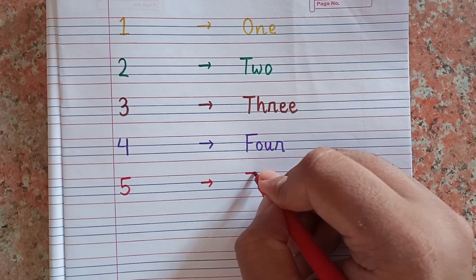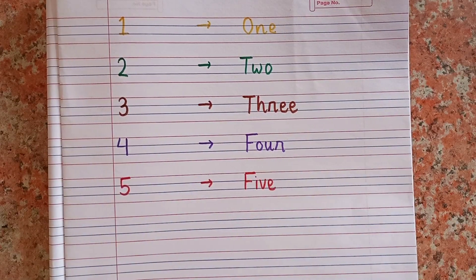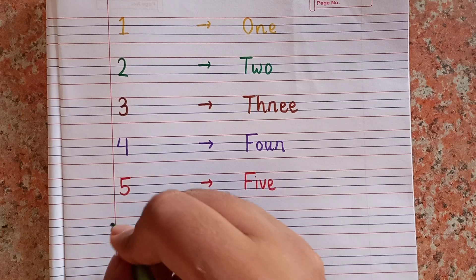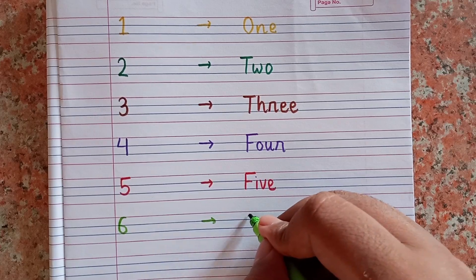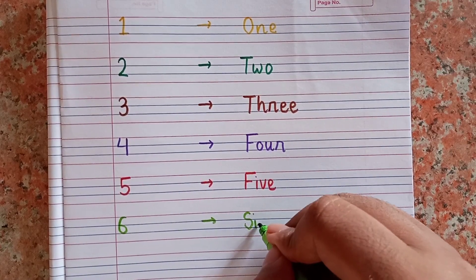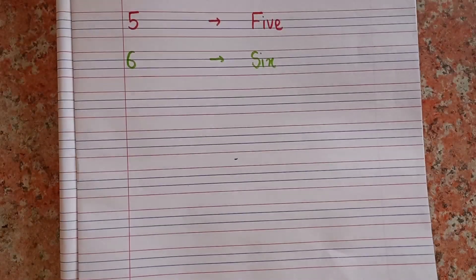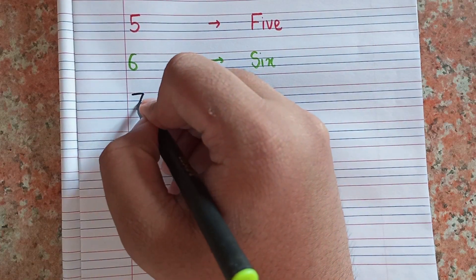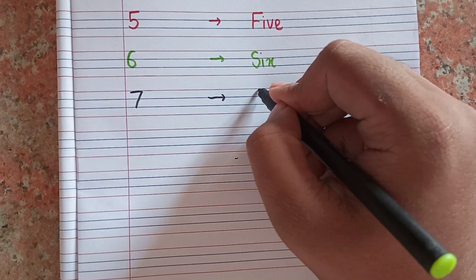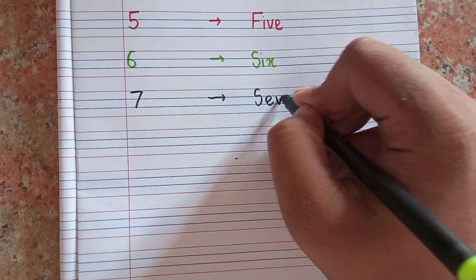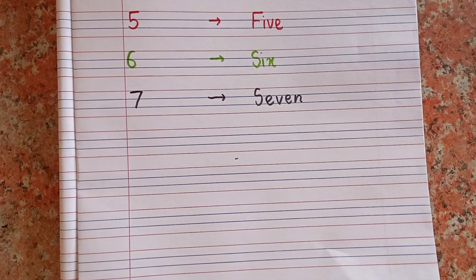After 4, next number will be 5. This is 5 and spelling of 5 is F-I-V-E. 5, F-I-V-E. After 5, next number will be 6. This is 6 and spelling of 6 is S-I-X. 6, S-I-X.